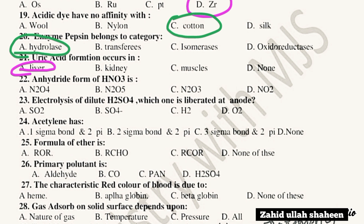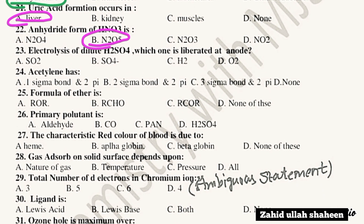Question 21: The anhydride form of HNO3 is N2O5 — option B. Question 22: Electrolysis of dilute H2SO4 — which one is liberated at the anode?